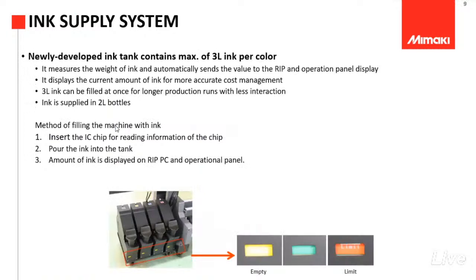CMYK. Terus ini adalah bentuk dari tank-nya. Jadi nanti sistemnya kita tuang ke tank-nya. Tank-nya ini kapasitasnya 3 liter dan sudah ada indikator dari ink level yang ada di mesin. Jadi nanti kalau memang sudah habis, dia ada indikatornya ke warna kuning.